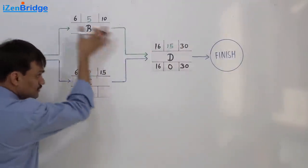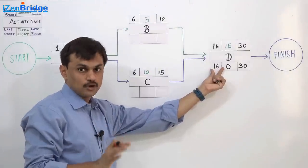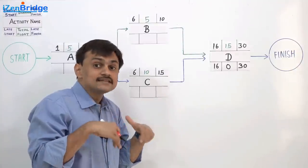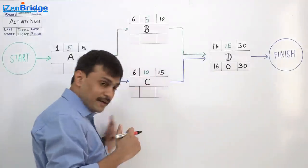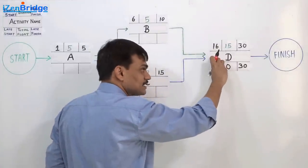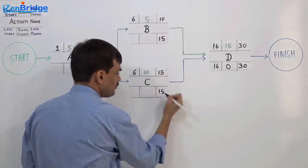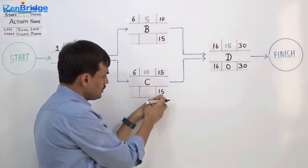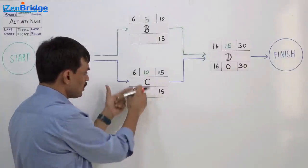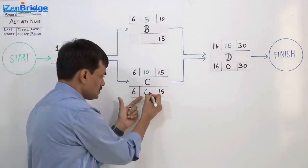Now for the backward pass: since D must start latest by day 16, activities B and C must finish by day 15. The late finish for both B and C is day 15. For activity C, if it must finish by day 15 with a duration of 10, the late start is 15 minus 10 plus 1 equals day 6. Late start equals early start and late finish equals early finish, so total float for C is zero.